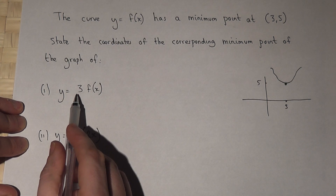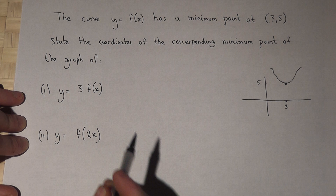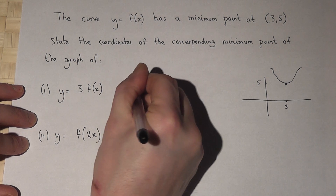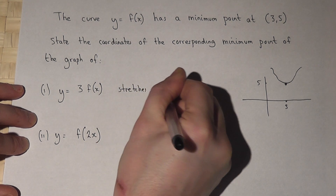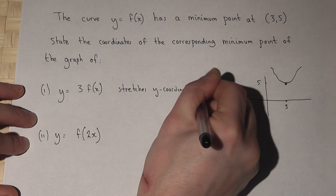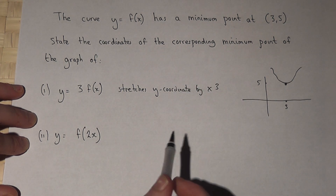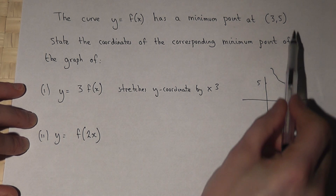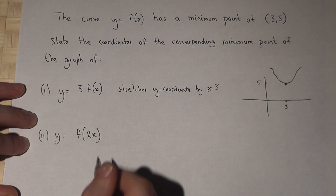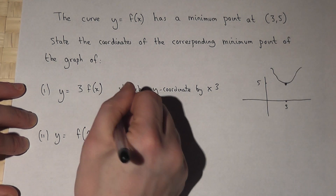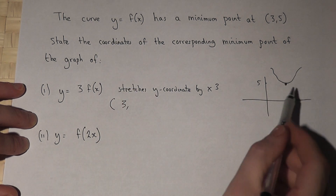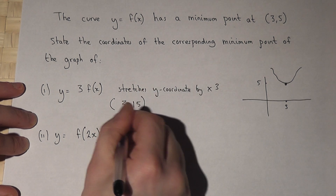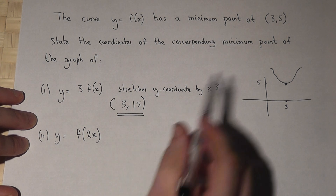3 lots of f(x) stretches the y-coordinate by a factor of 3. So the y-coordinate, rather than being at 5, will be at 3 times 5, which is 15, but the x-coordinate doesn't change. So the new coordinate will be at still 3 across, but now, rather than 5 up, it'll be 15 up. So (3, 15) is the new coordinate of the minimum point.